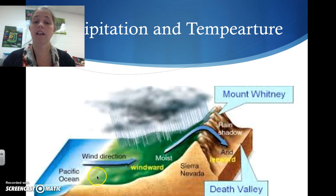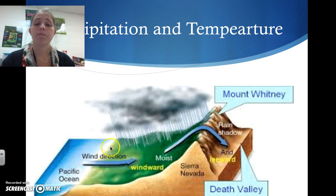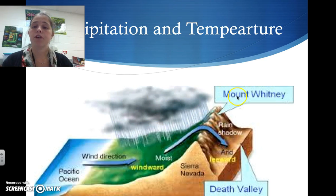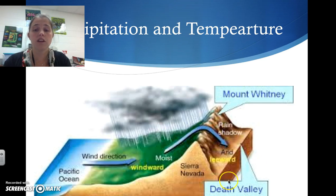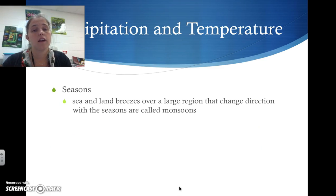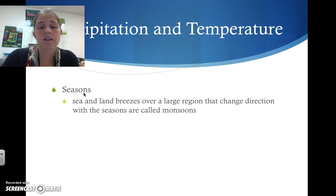For example, in California, the area before the Sierra Nevada mountains is green, lush, and moist because clouds dump rain on the windward side. But on the other side, you get Death Valley — a desert sitting on the leeward side, in the rain shadow, receiving almost no precipitation.